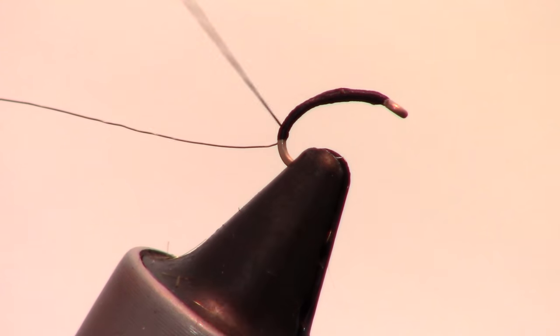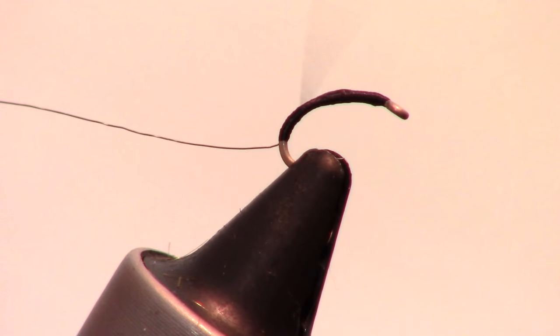And then back up to just shy of the eye of the hook. If your thread starts to get twisted, untwist it by spinning the bobbin counter clockwise.